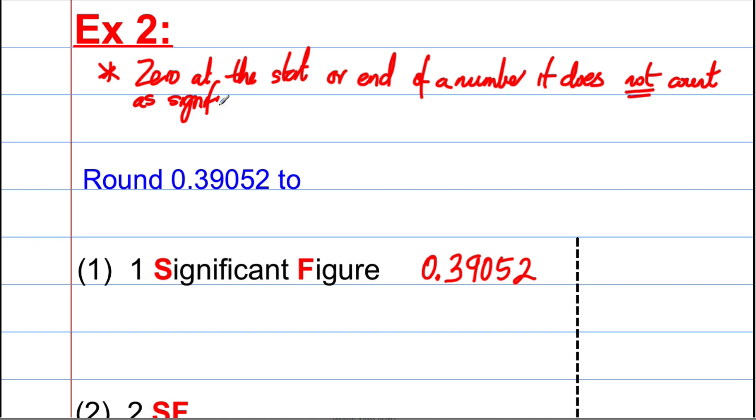If you have a zero at the start or end of a number, it does not count as significant. So that's just a rule you'll have to remember. It does not count as significant, but a zero between two digits, e.g. if you have the number 2, 4, 0, 8, that does count. So zeros at the start or end don't count. Zeros in the middle of a number do count.